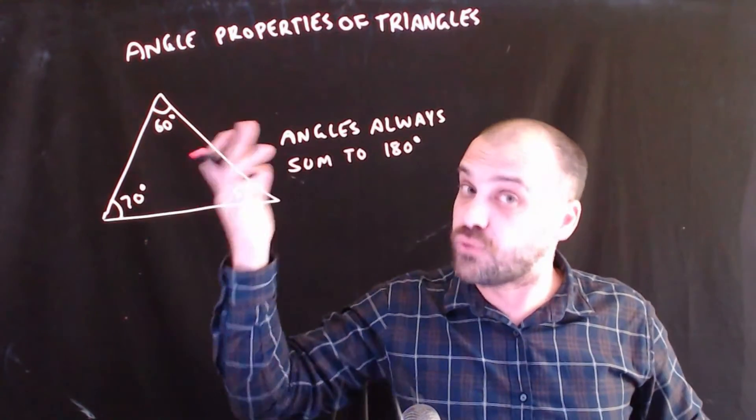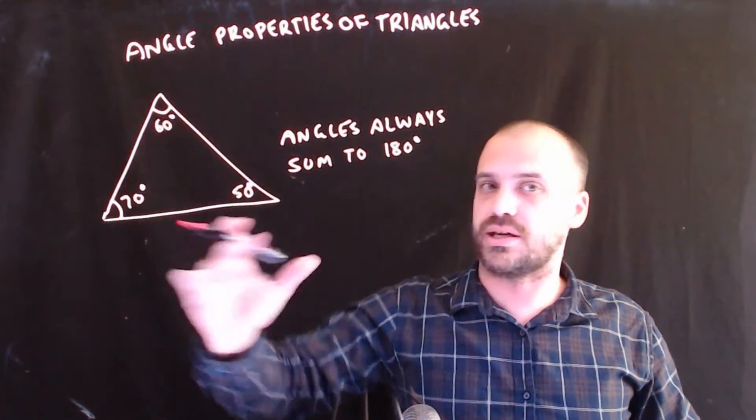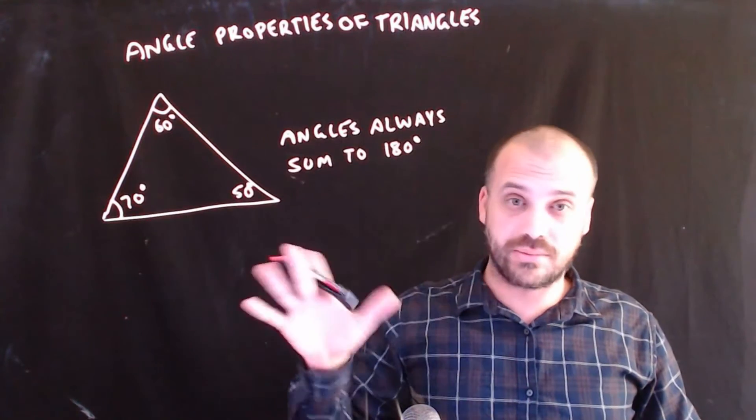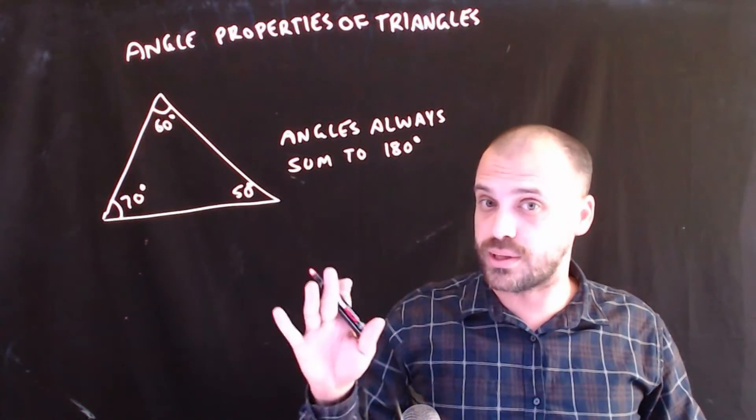For example, 70 plus 60 plus 50 adds up to 180. And it doesn't matter what the triangle looks like. That's always going to be the case.